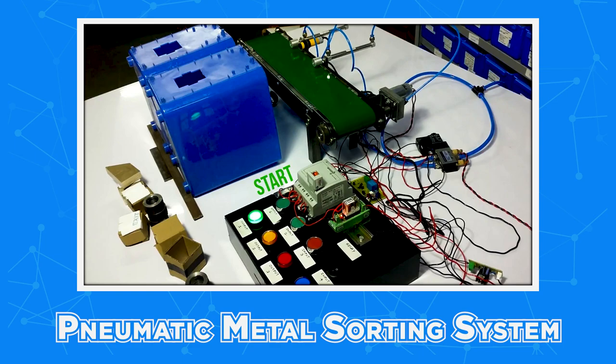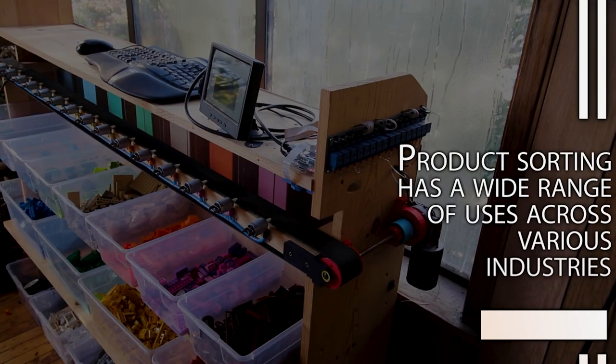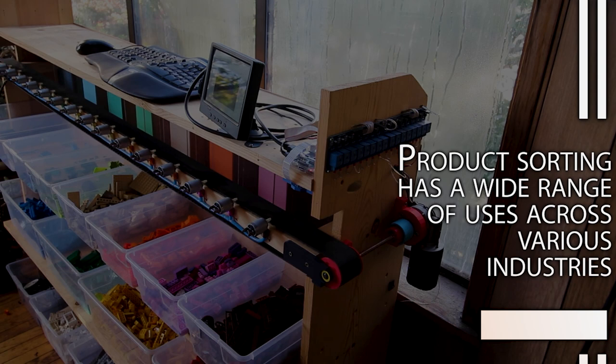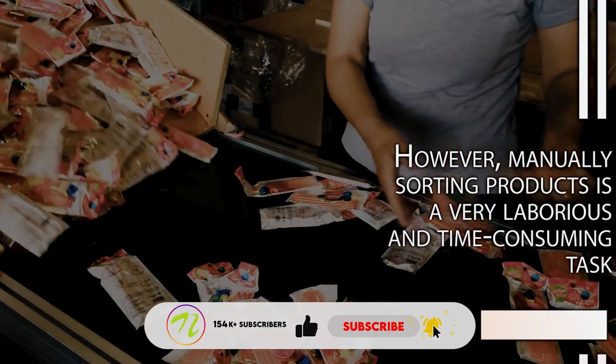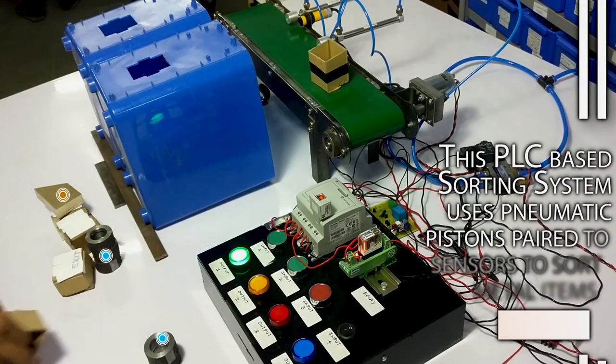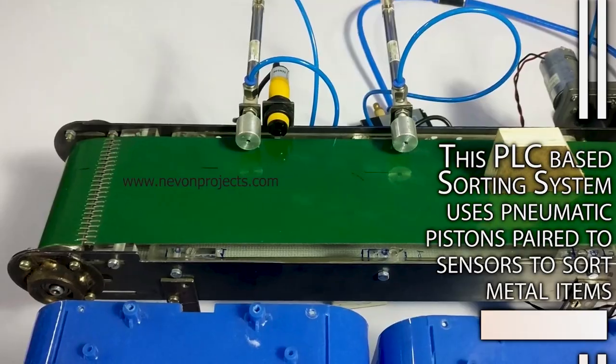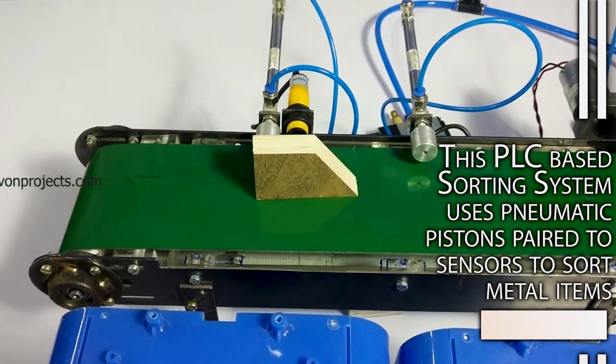Pneumatic metal sorting system. Product sorting has a wide range of uses across various industries. However, manually sorting products is a very laborious and time-consuming task. This PLC-based sorting system uses pneumatic pistons paired to sensors to sort metal items.